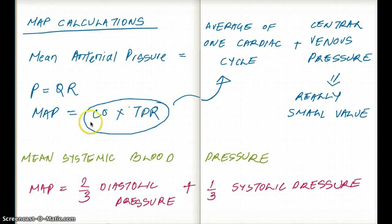We take the cardiac output times total peripheral resistance. That will give us one average cardiac cycle pressure plus the central venous pressure.